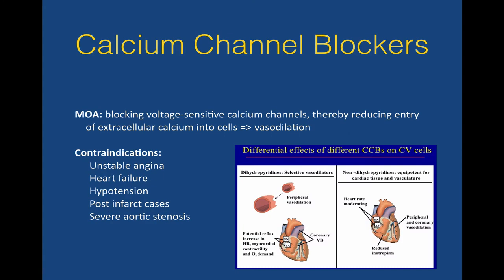Angiotensin 2 blockers work very similarly, but they block angiotensin 2 right at the receptor level. Common ones include losartan, valsartan, and candesartan. They also help in patients with heart failure and kidney disease and follow the same rule of checking serum creatinine. We should also be checking potassium. A little note about losartan: it has uricosuric clearance properties, so if a patient has gout, losartan is probably the ARB of choice. Valsartan is the ARB that has been most studied in congestive heart failure patients.